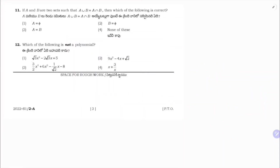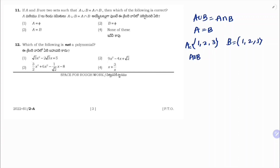If A and B are two sets such that A ∪ B = A ∩ B, then definitely A = B. Suppose A = {1, 2, 3} and B = {1, 2, 3}. A ∪ B = {1, 2, 3} and A ∩ B = {1, 2, 3}. So if A = B, then A ∪ B = A ∩ B. Correct option is 3.